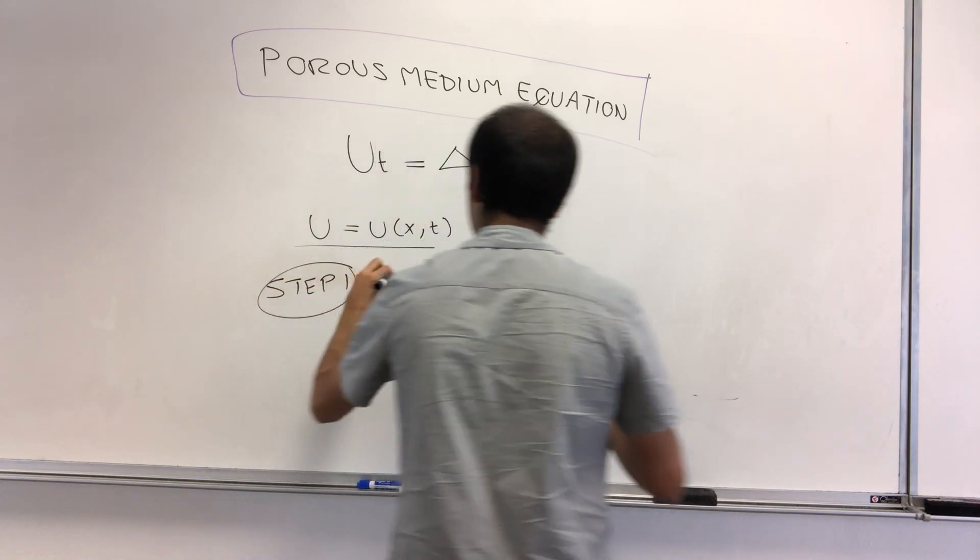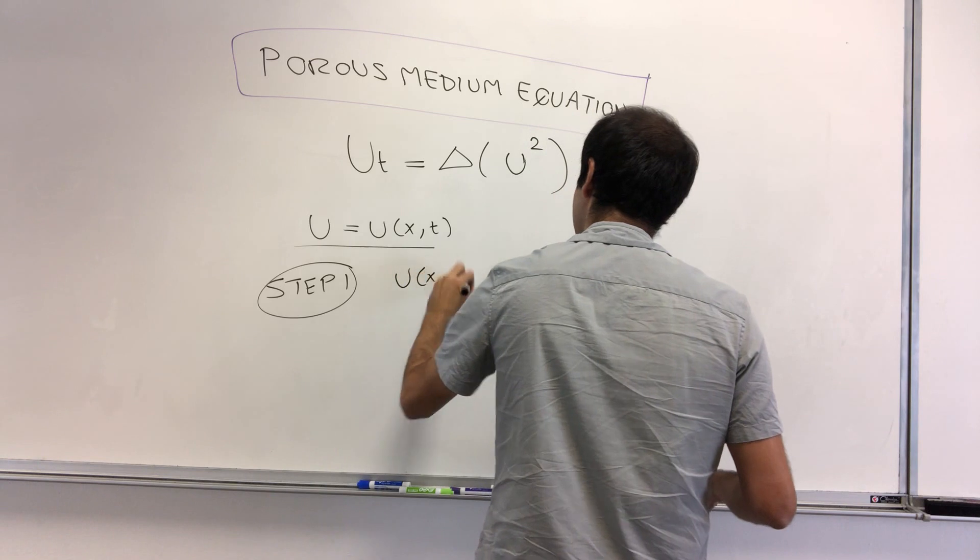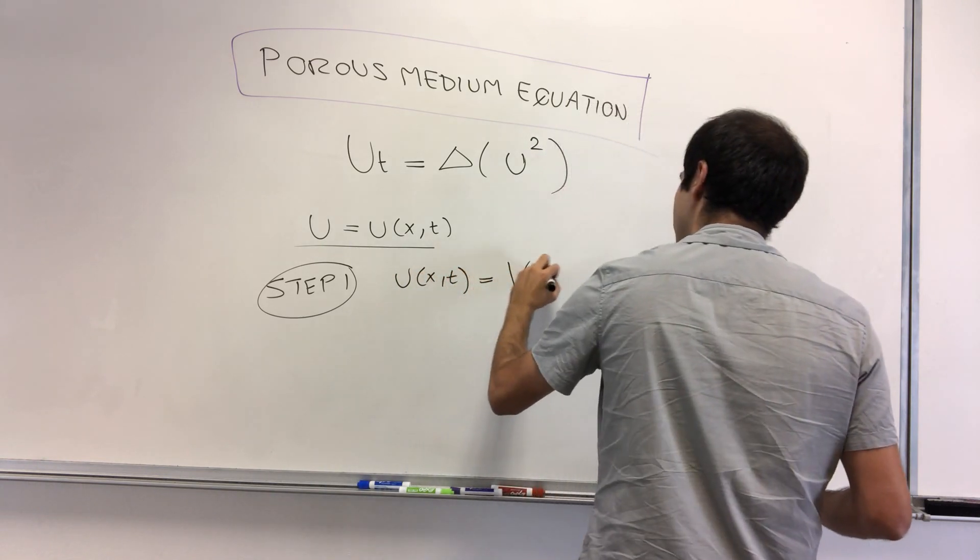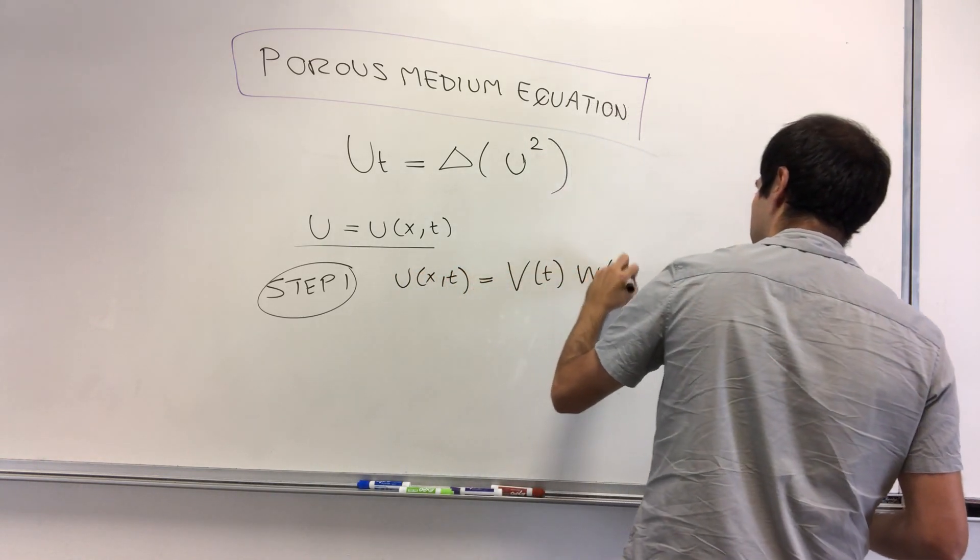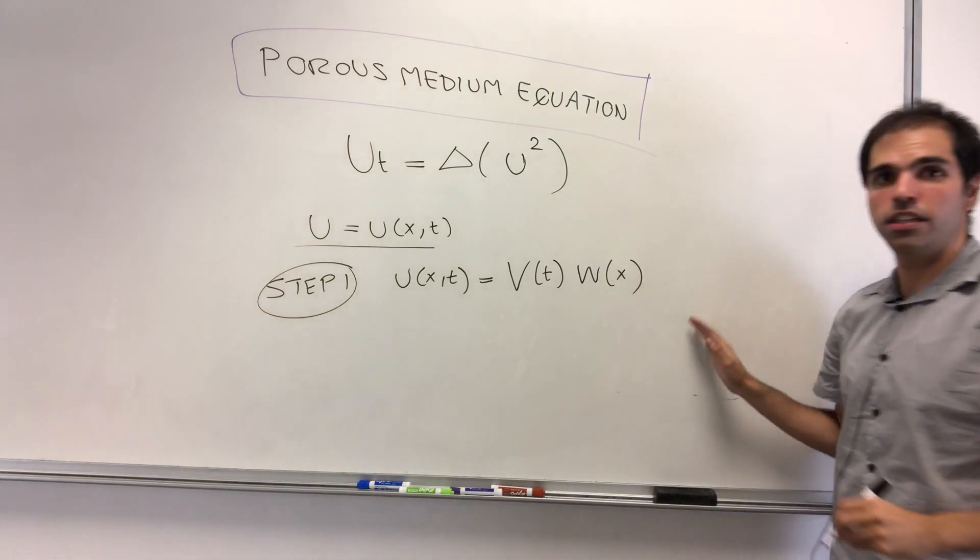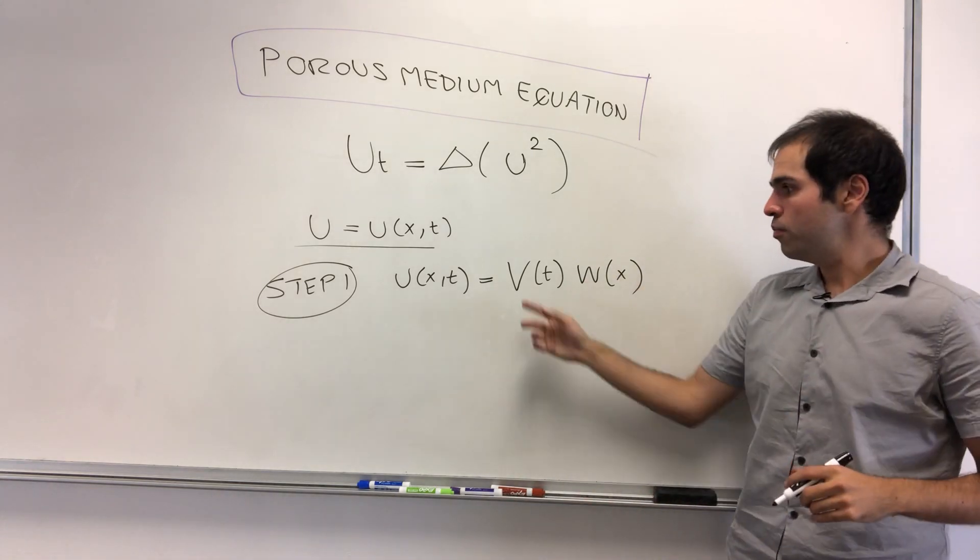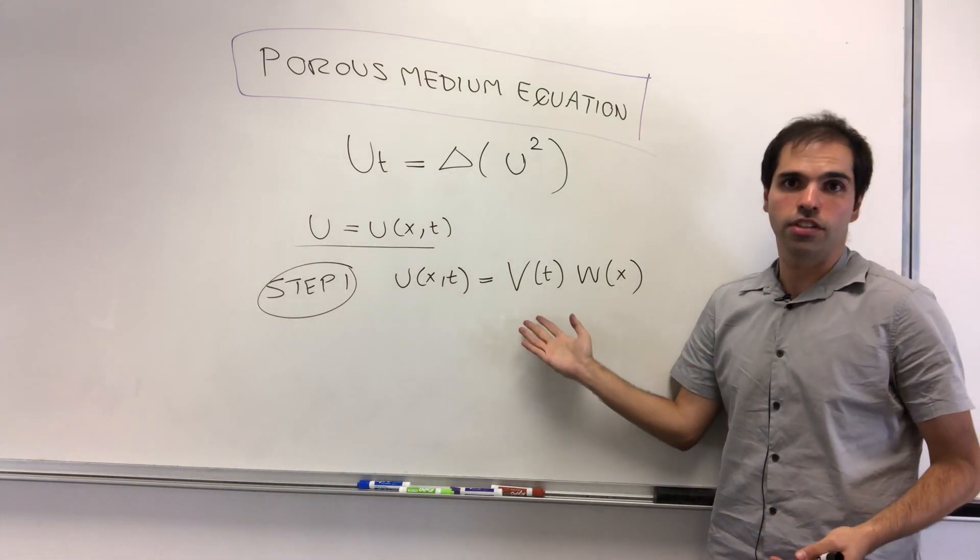In other words, let's assume that u of x t equals a function of t times a function of x. So v of t times w of x.